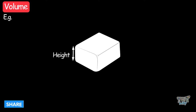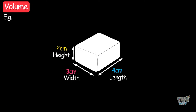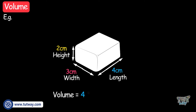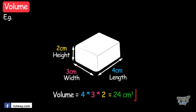Here we have an example. The height of this object is 2 centimeters, width is 3 centimeters, and the length is 4 centimeters. So its volume will be 4 multiplied by 3 multiplied by 2, which equals 24 cubic centimeters. This is the way to find out the volume of regular shapes.